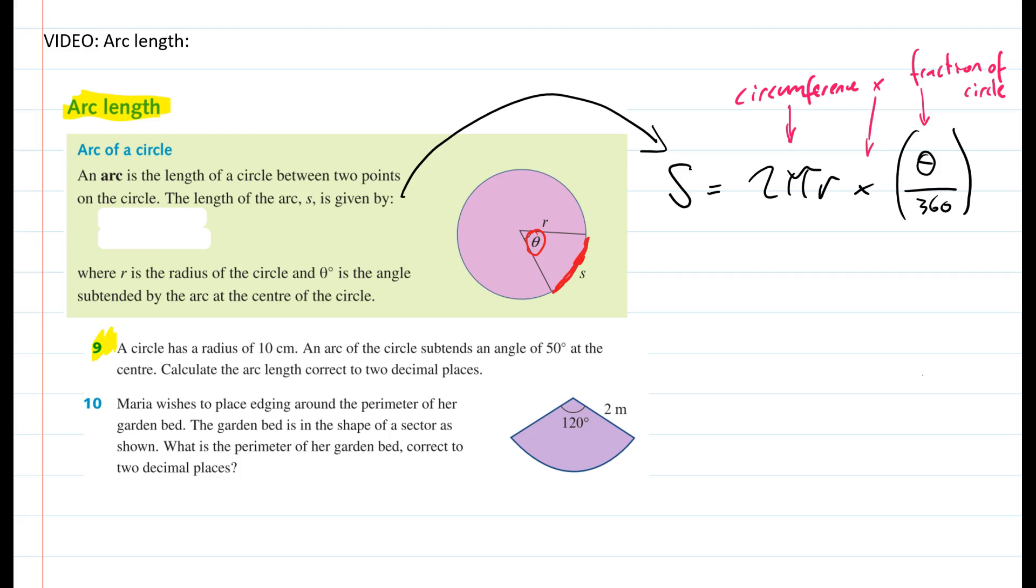I'm going to do question 9 to show you how to do it. It says a circle has a radius of 10 centimeters, an arc of the circle subtends an angle of 50 degrees at the center. Calculate the arc length, correct to two decimal places.